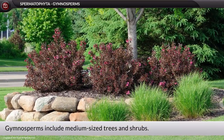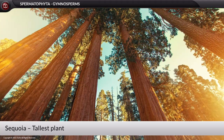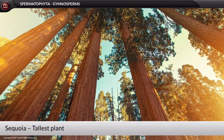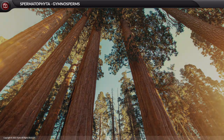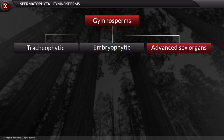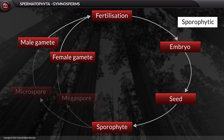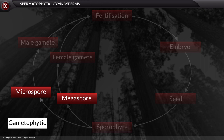Gymnosperms include medium-sized trees and shrubs. Sequoia, a redwood tree, is one of the tallest plant species. Gymnosperms are tracheophytic, embryophytic, and have advanced sex organs. The sporophytic phase is the main plant body and is dominant over the gametophyte.